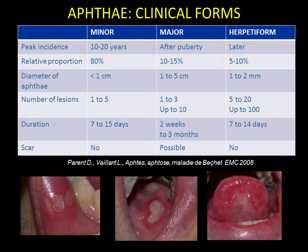Minor aphthae, which are the common form, are small, often somewhat oval-shaped, less than one centimetre across and heal within a week. Major aphthae are between one and five centimetres across and take much longer to heal, sometimes several months.